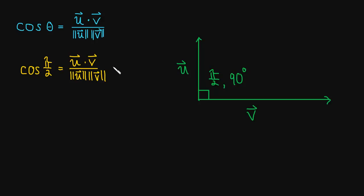Well, the cosine of π over 2 is 0. So all three of these things are equal, and they're all equal to 0. So what does that tell us?